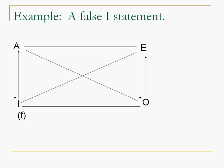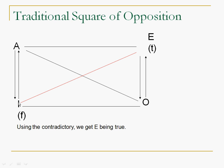So, let's look at an example. We have a false I statement. Right? We're just given that. What do we know? Well, using the contradictory, E has to be true. All right? Subalternation, false goes up, which makes A false. Or, again, knowing that E is true, using the contrary, A has to be false. All right? And what's that going to tell us about O?